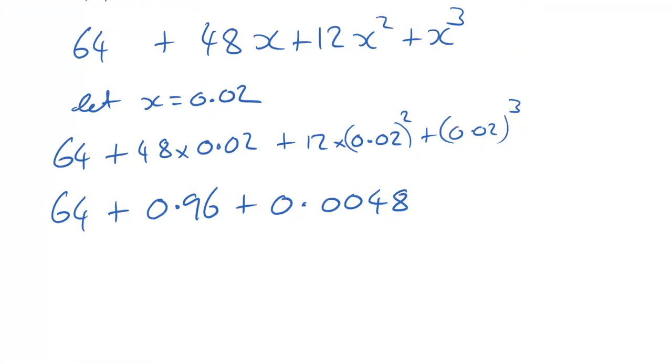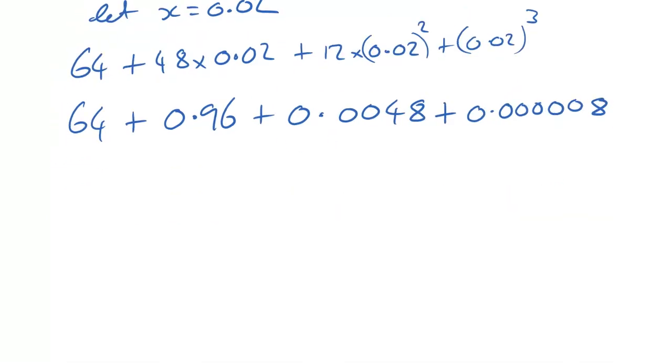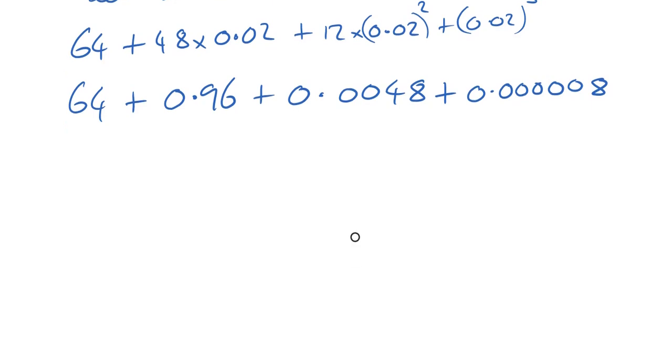Now, we already mentioned that 0.02 squared is 0.0004. So times it by another 0.02, it's going to have an 8 in it. It's going to be 0.0 and there's going to be five 0s and an 8. Okay. You could take your time and do that a bit slower, I'm sure, and get there as well. Right. So now we're going to add these up.